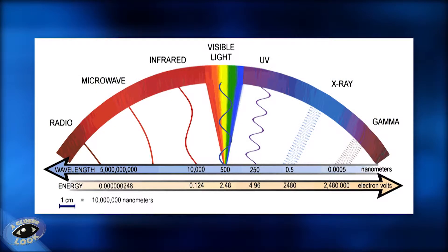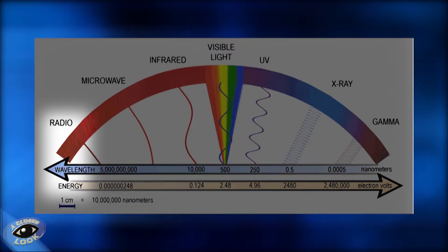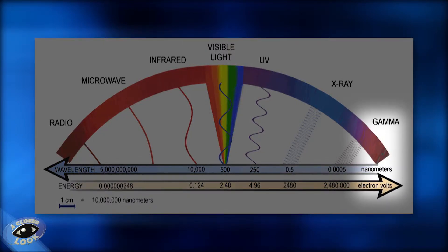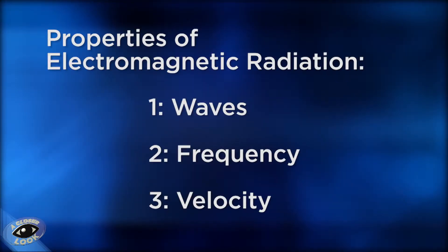First, we need to look at electromagnetic radiation — forms of energy that are around us all the time, including radio waves, visible light, and gamma radiation. There are three fundamental properties of electromagnetic radiation that allow us to perform the calculations you'll see in this video.